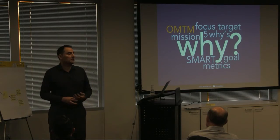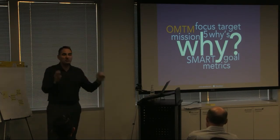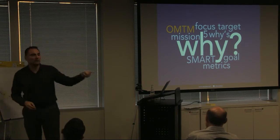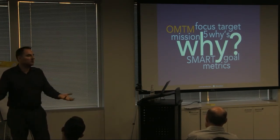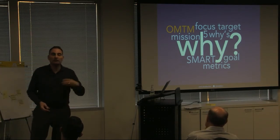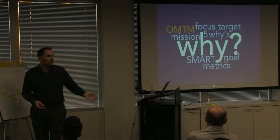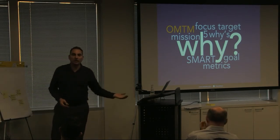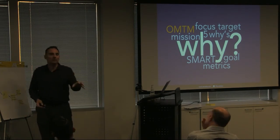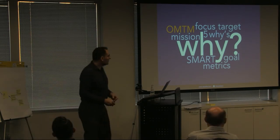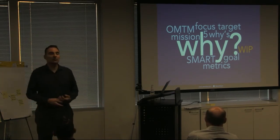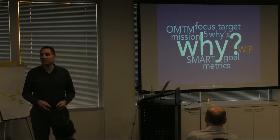The One Metric That Matters is the one thing most important to us based on where we are right now — with the expectation that it changes over time. The classic startup example: initially you just want to attract attention and get people to sign up; once you have enough sign-ups, the next goal becomes converting people into repeat visitors and eventually paying customers. At any given point in time there's one thing we really care about. By doing that, we hopefully get the benefits of work-in-progress limits, which helps us deliver value faster without being distracted by other things.